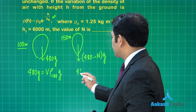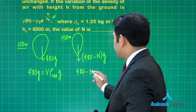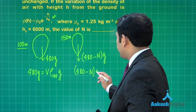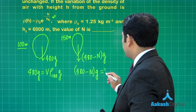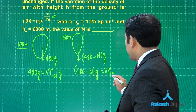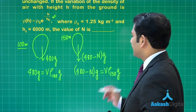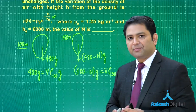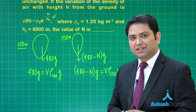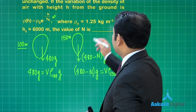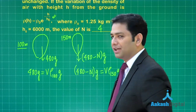Dividing the two equations and doing a little exponent calculation — which is not at all difficult — the value of n comes out to be 4.